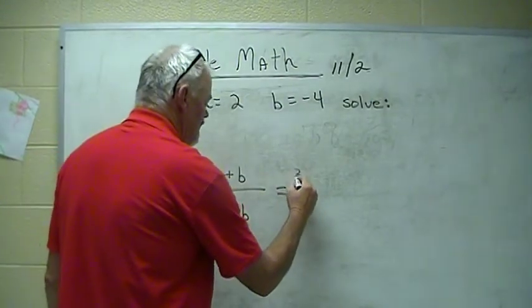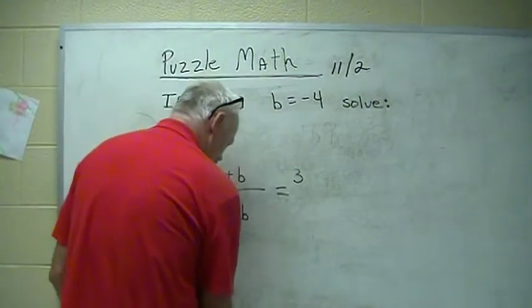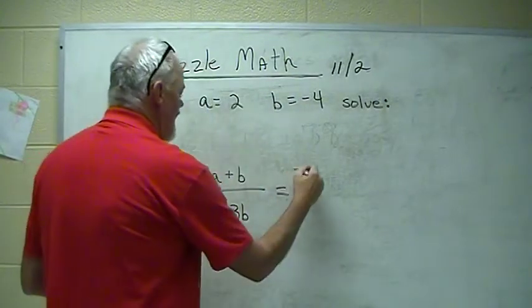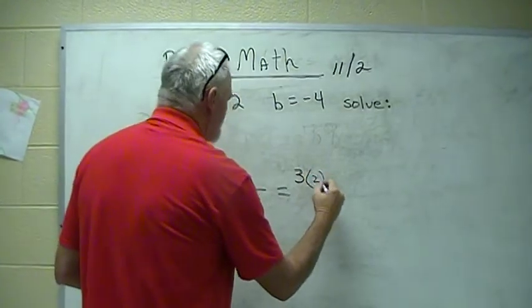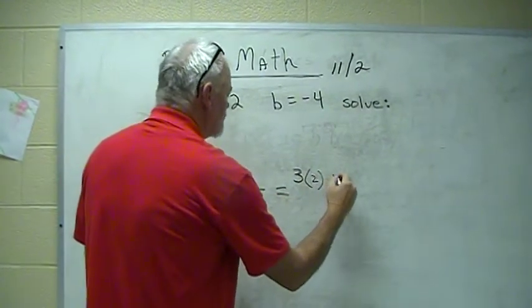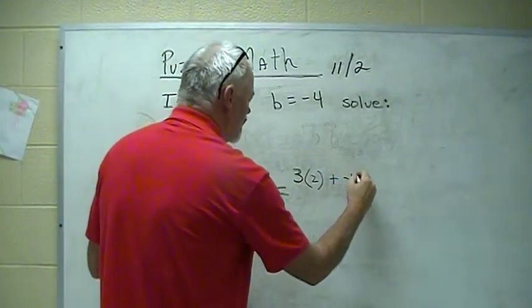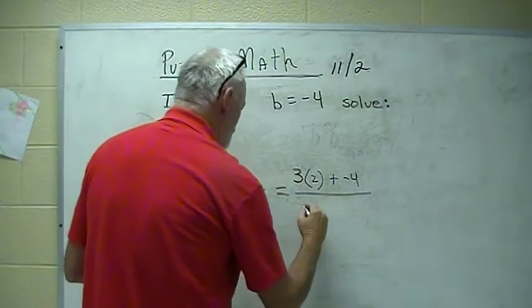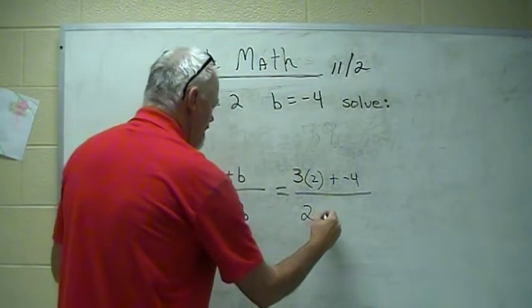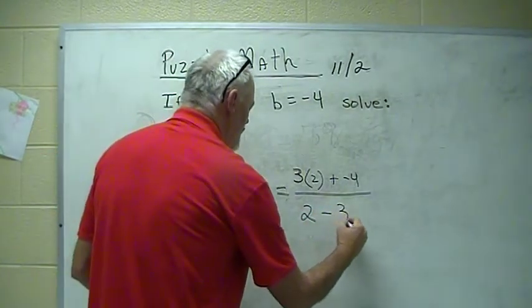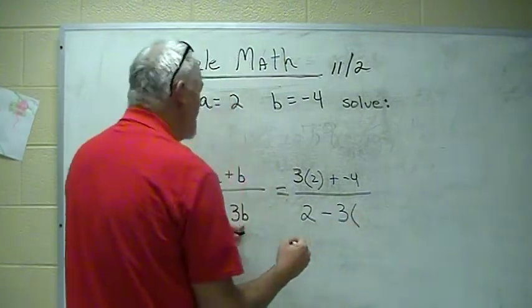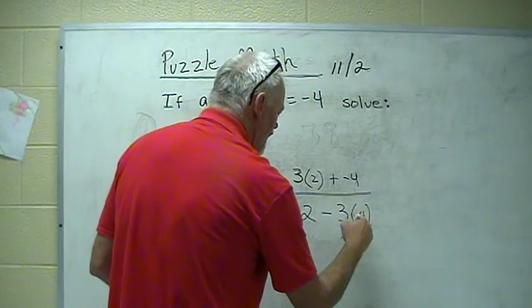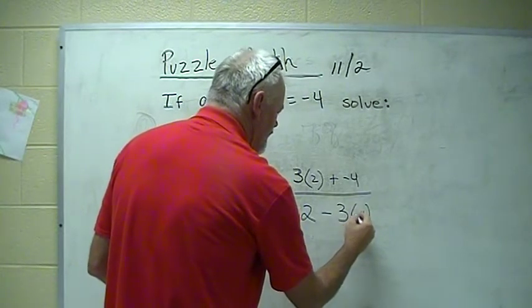We're gonna do 3. This is not a very good marker. Let's go here. 3, a little better. Times A, and A's are 2. So, 3 times 2 plus negative 4. Divided by 2. So, every A is a 2. Minus 3 times B. What's B? It's negative 4. 3 times negative 4. Kinda looks ugly. And it is ugly.